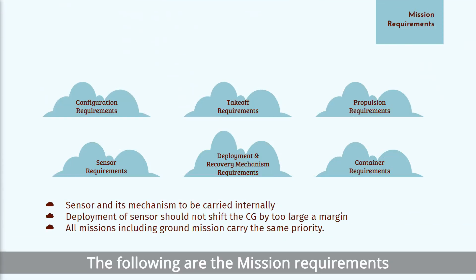The following are the mission requirements that we have gathered. The important points to highlight would be that the sensor and its mechanism has to be carried internally, while the deployment of it shouldn't shift the CG of the aircraft by too great a margin. Secondly, based on mission scoring, all three missions and the ground mission are weighted equally, hence carry the same priority.